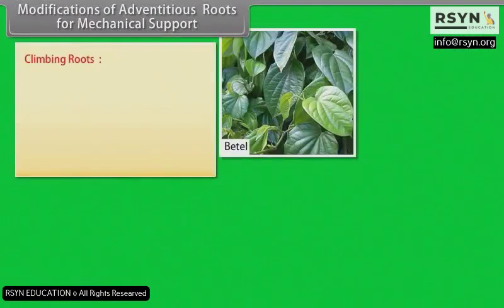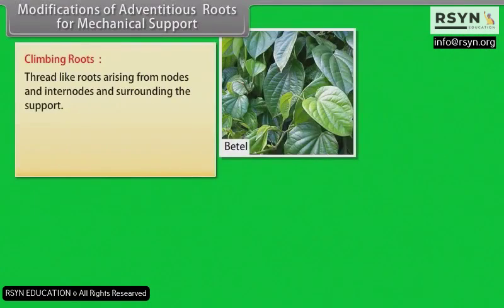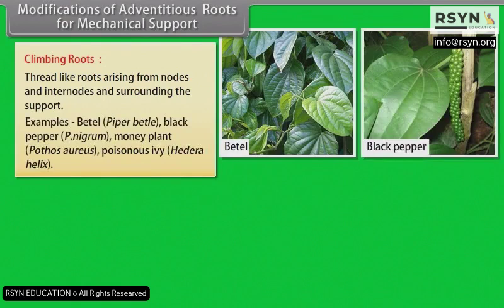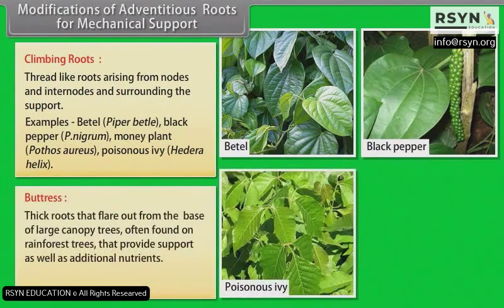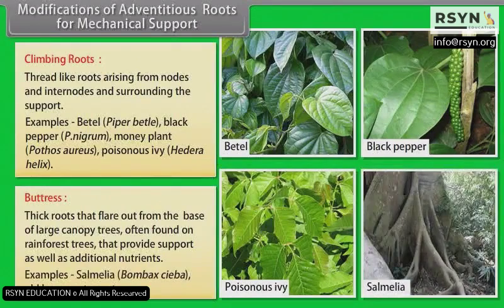Climbing roots: Thread-like roots arising from nodes and internodes and surrounding the support. Examples: betel, black pepper, money plant, poison ivy. Buttress roots: Thick roots that flare out from the base of large canopy trees, often found on rainforest trees, that provide support as well as additional nutrients. Examples: Salmalia, old banyan tree, etc.